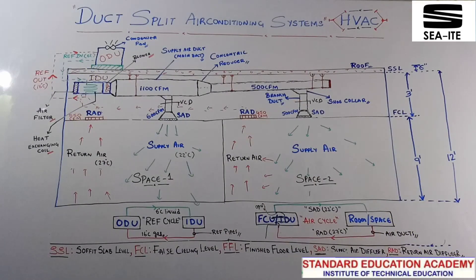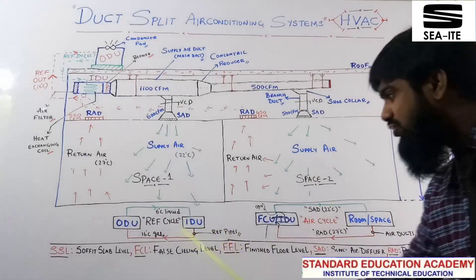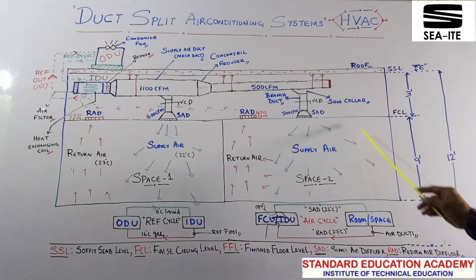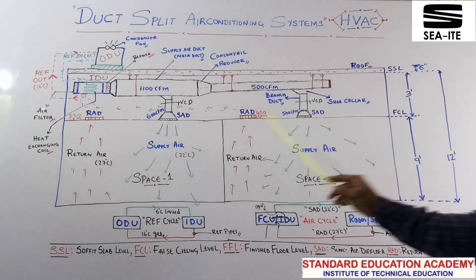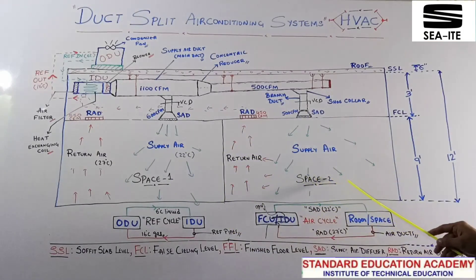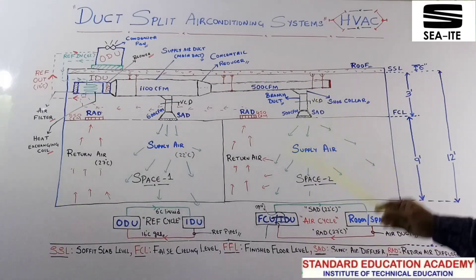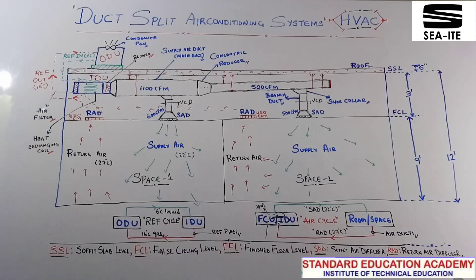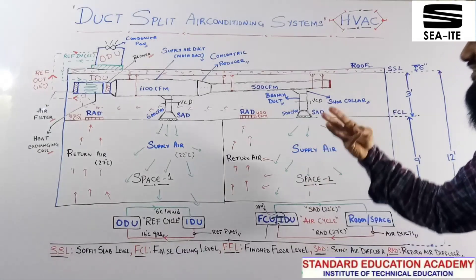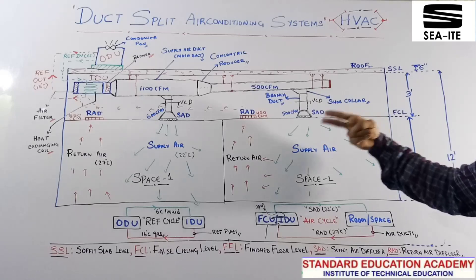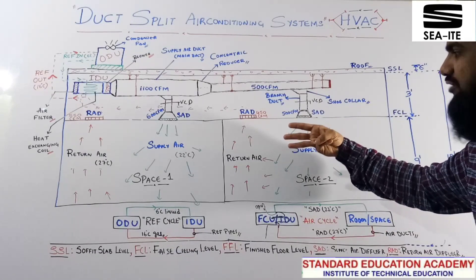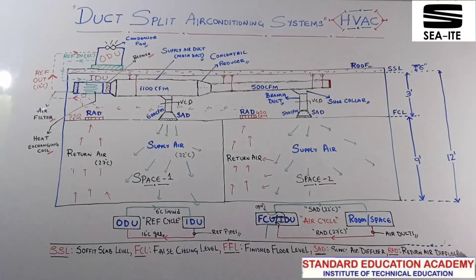This is the way both cycles work together to give us a rated temperature of 22 degree Celsius in both spaces, attaining indoor air quality criteria. To achieve indoor air quality, three things are there: one is temperature control, second is humidity control, third is fresh air. If these three things are fulfilled, then we are getting quality air.